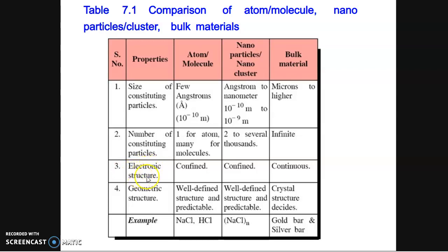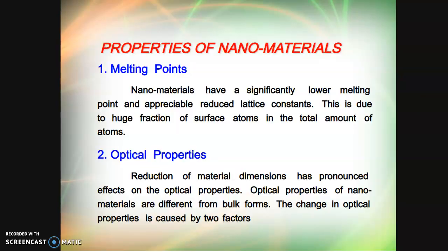Electronic structure is confined for atoms and nanoparticles but continuous for bulk materials. Moving on to geometric structure: well-defined and predictable for molecules like NaCl and HCl. Nanoparticles also have well-defined structure and predictable—for example, N number of NaCl. Bulk material crystal structure will decide the geometric structure, for example, gold bar and silver bar.